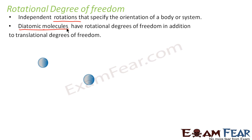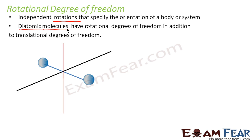Consider any diatomic molecule, say oxygen — these are the two oxygen atoms joined together by the bond. Perpendicular to the atomic bond, perpendicular to the interatomic axis, there are two perpendicular axes: one is this axis and the other one is this axis. So for this diatomic molecule, two rotations are possible.